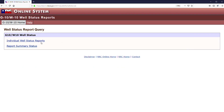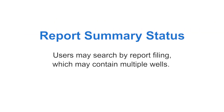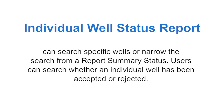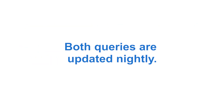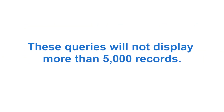Once launched, users may select Individual Well Status Report or Report Summary Status. In Report Summary Status, users may search by report filing, which may contain multiple wells. Individual Well Status Report can search specific wells or narrow the search from a report summary status. Users can search whether an individual well has been accepted or rejected. Both queries are updated nightly and will not display more than 5,000 records.